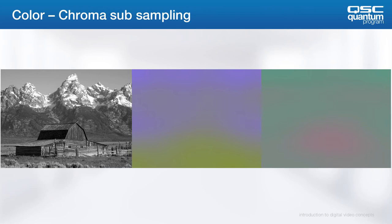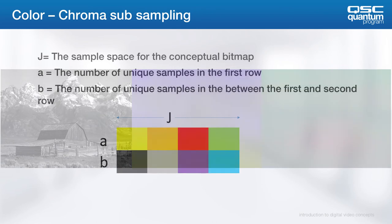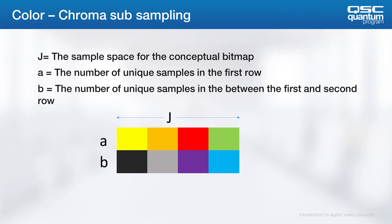This image shows the chroma significantly compressed while the luma remains uncompressed. The subsampling process is expressed by 3 or 4 parts if the alpha channel is included. These subsampling ratios are used to create a conceptual bitmap j pixels wide and 2 pixels high. The ratios use arbitrary variables: j equals the sample space of the conceptual bitmap, a equals the number of unique samples in the first row, and b is the number of unique samples between the first and second row. This bitmap is not an actual representation of how many pixels are displayed on a device — it gives us the representation of how many color samples are transmitted per pixel and can be used to calculate the amount of bandwidth reduction.